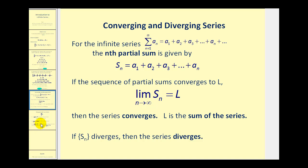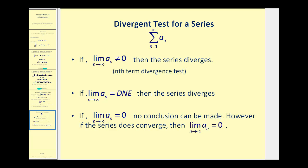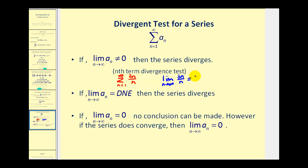One more important idea: the divergence test. If the limit of a sub n as n approaches infinity does not equal zero, then the series diverges. Remember, a sub n is the formula that generates the terms in the series. So this tells us that if the terms don't approach zero as n increases to infinity, the series is guaranteed to diverge. For example, if we have the infinite sum of three n divided by n and take the limit of a sub n, this limit equals three. Since this limit doesn't equal zero, we can say this infinite series diverges. Similarly, if the limit of a sub n doesn't exist — for instance, the limit as n approaches infinity of three n equals infinity — the series also diverges.